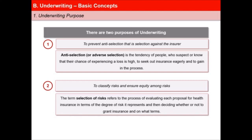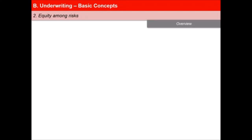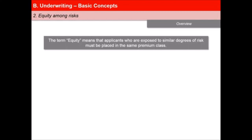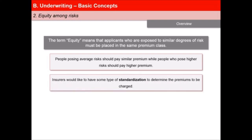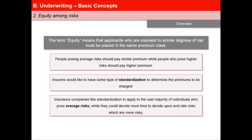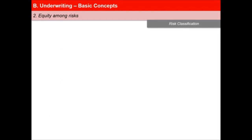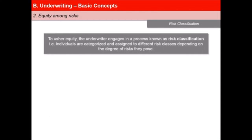The term selection of risks refers to the process of evaluating each proposal for health insurance in terms of the degree of risk it represents and then deciding whether to grant insurance or not and on what terms. The term equity means that applicants who are exposed to similar degrees of risk must be placed in the same premium class. People posing average risks should pay similar premium while people who pose higher risks should pay higher premium. Insurers would like to have some type of standardization to determine the premiums to be charged. To usher equity, the underwriter engages in a process known as risk classification.